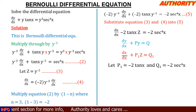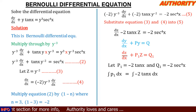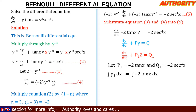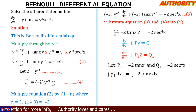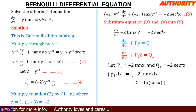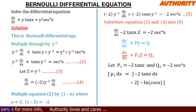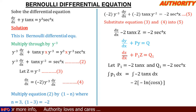We have P1 equal to minus 2·tan(x). Let's integrate this P1 with respect to x. The integral of minus 2·tan(x) dx: we take minus 2 as a constant behind, so we have minus 2 times the integral of tan(x) dx. Integrating tan(x) gives minus ln|cos(x)|. Multiplying by minus 2 gives positive 2·ln|cos(x)|. So the integral of P1 dx equals 2·ln(cos x).